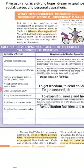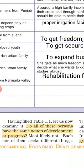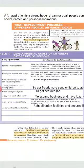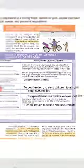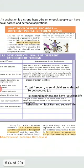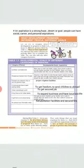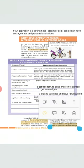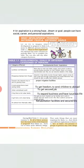Now look at this highlighted topic. There is one question: Do all of these persons have the same notions of development or progress? The answer is absolutely no, because they have different situations and circumstances, so they have different notions of development. A poor farmer and a rich farmer face different circumstances, so their developmental goals cannot be the same. Farmers from Punjab and Rajasthan live in separate areas facing separate atmospheric conditions, so their developmental goals will differ. It depends upon their own life circumstances.